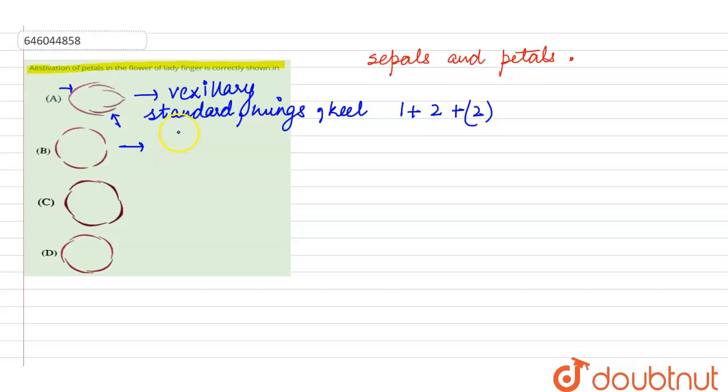In the second option, the petals just touch the margin of each other. This type will be called as valvate, and it is called so because it occurs in the case of Calotropis.